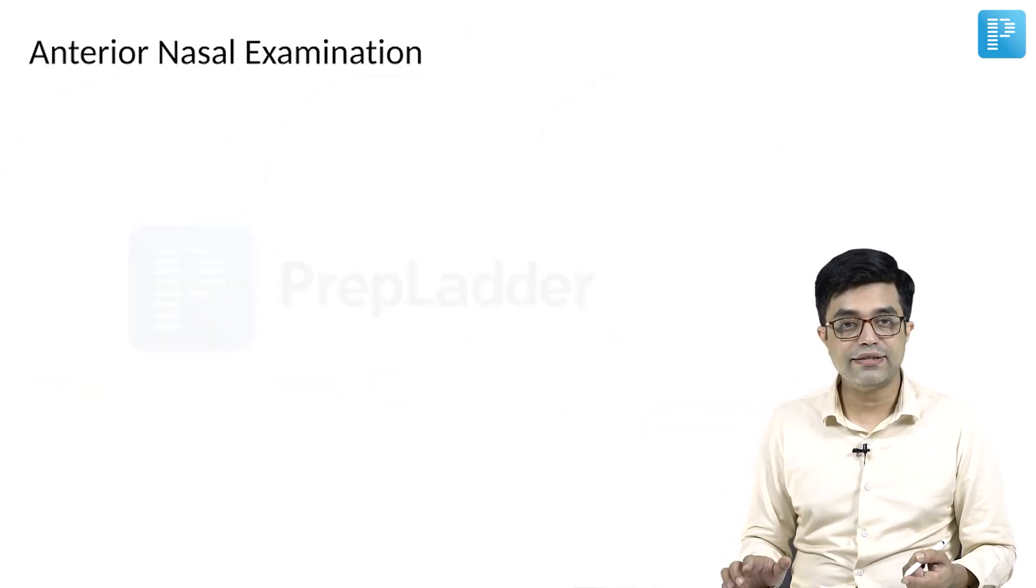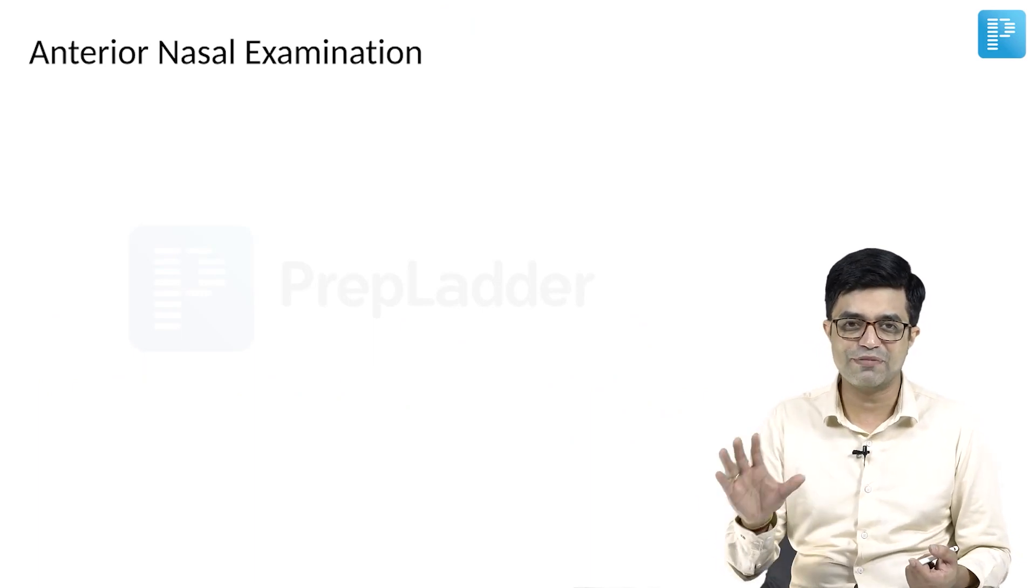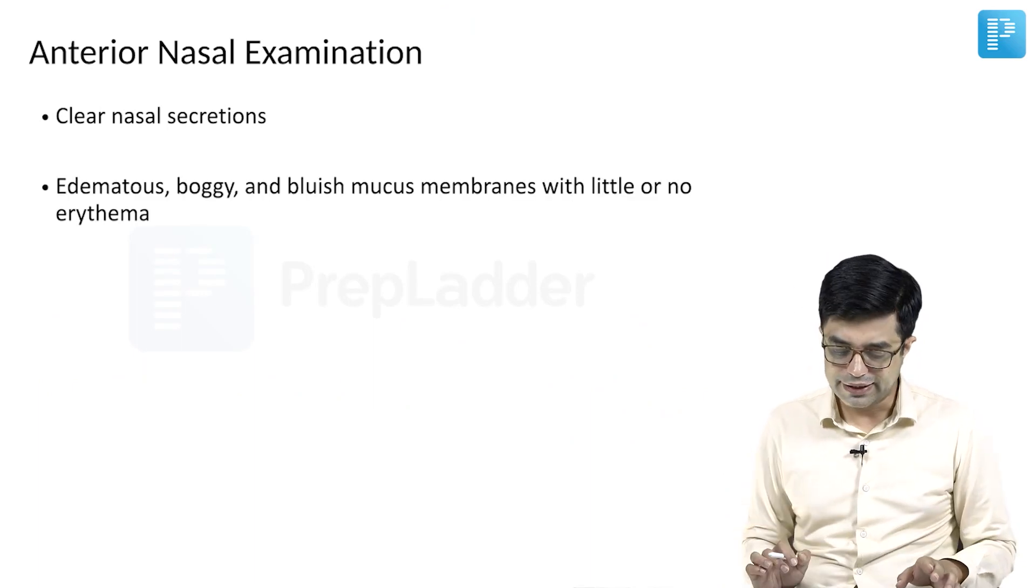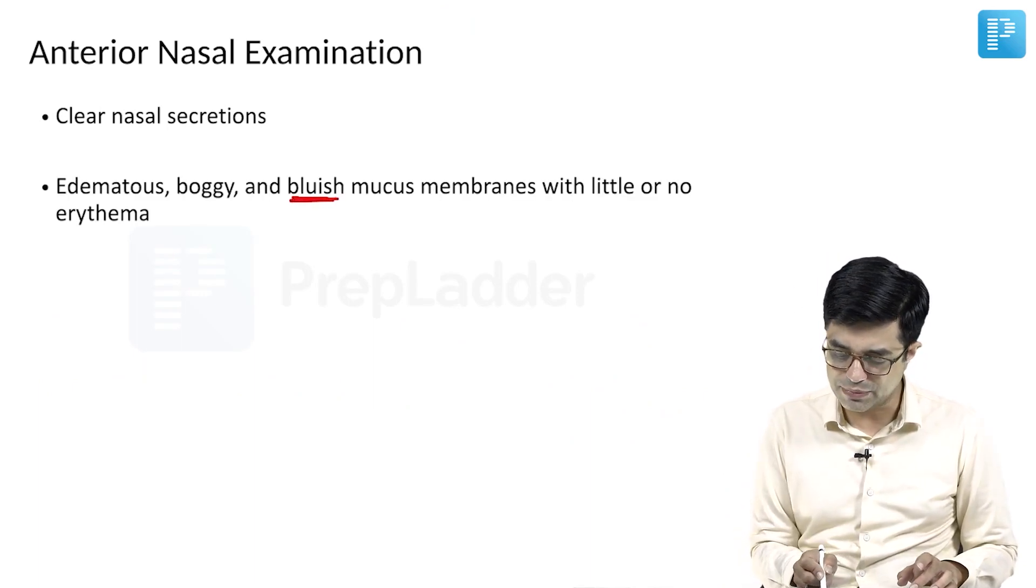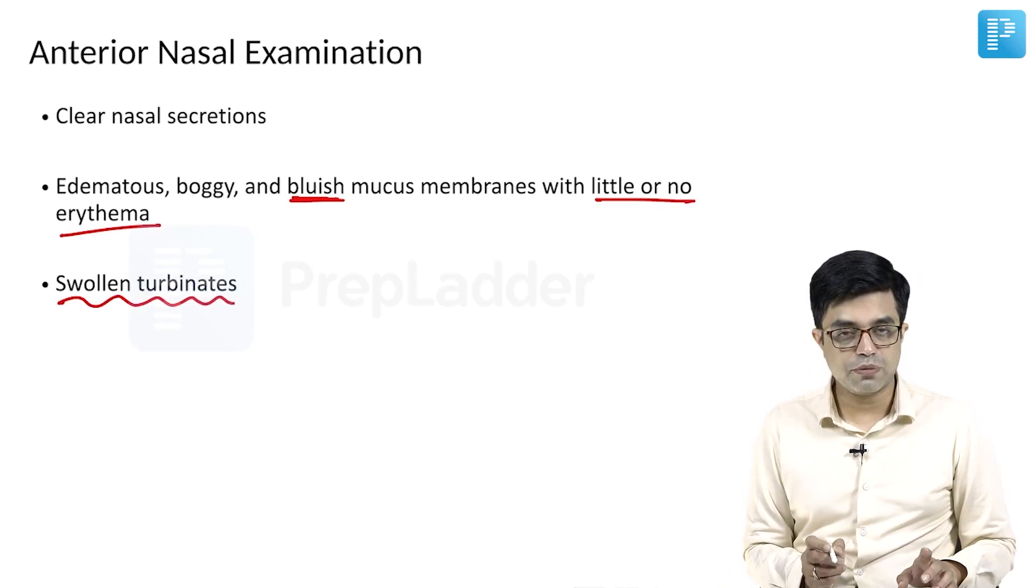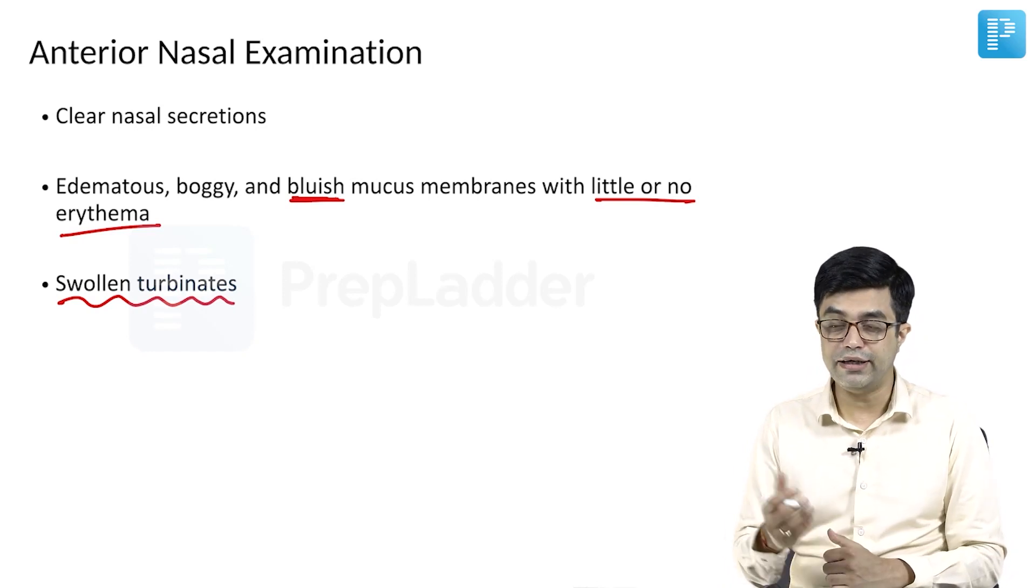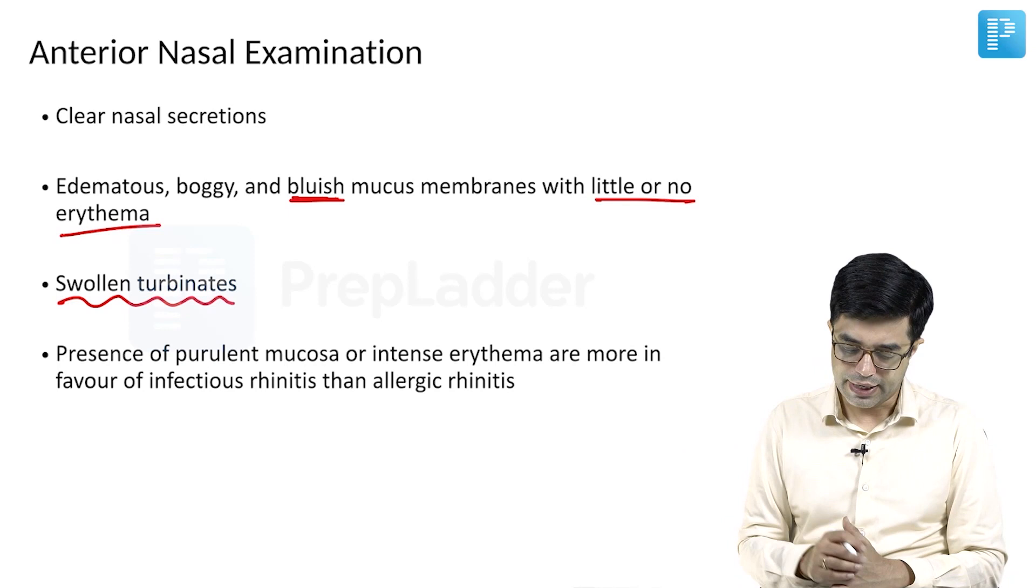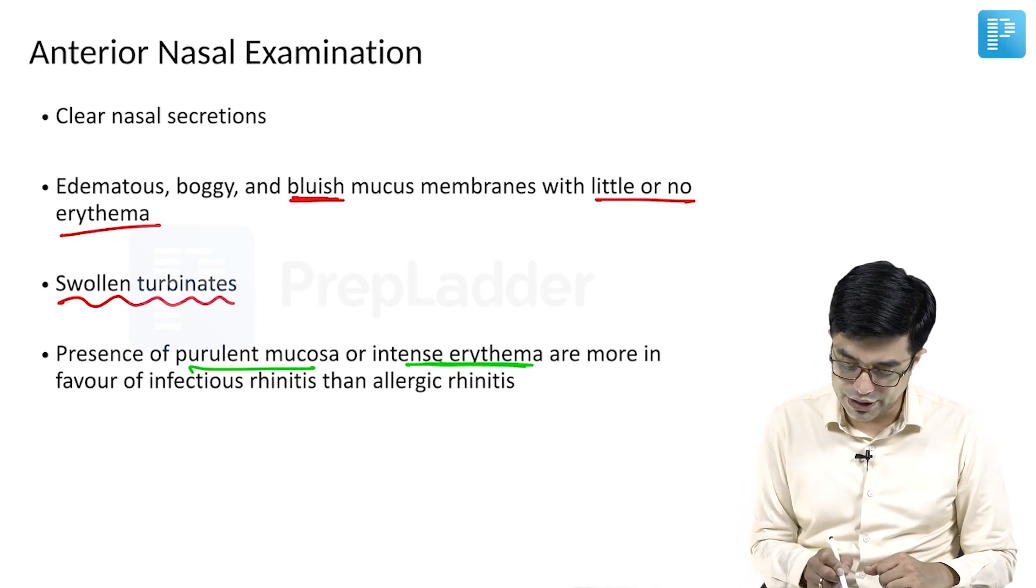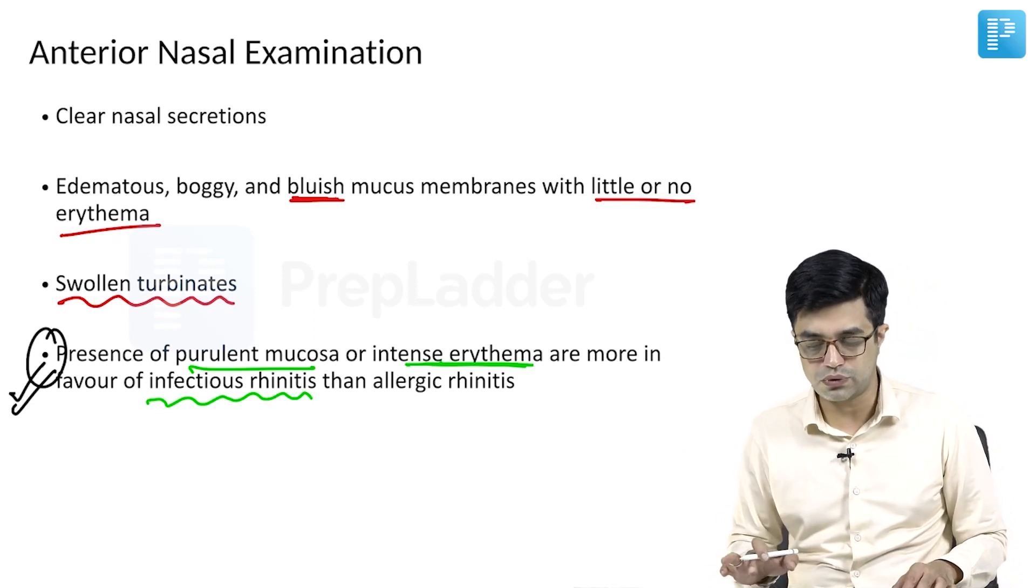When you do anterior nasal examination using a speculum examination, because we as pediatricians can only do a speculum examination, you will find that there will be clear nasal secretions. There will be edematous boggy and bluish mucous membrane with little or no erythema. Swollen turbinates will also be present which will further cause compromise of the nasal cavity area for proper breathing to happen. And presence of purulent mucosa as well as intense erythema are more in favour of infectious rhinitis than allergic rhinitis. Please remember this point for clinical MCQs.